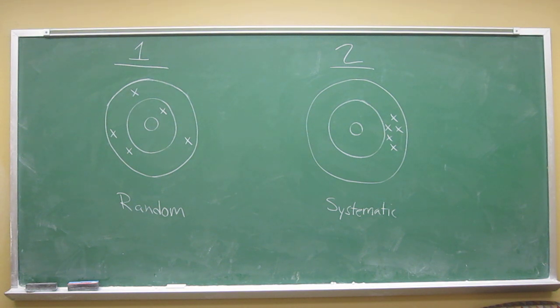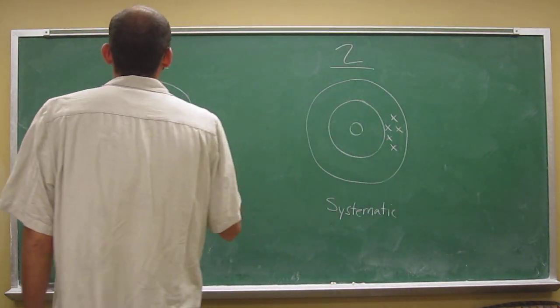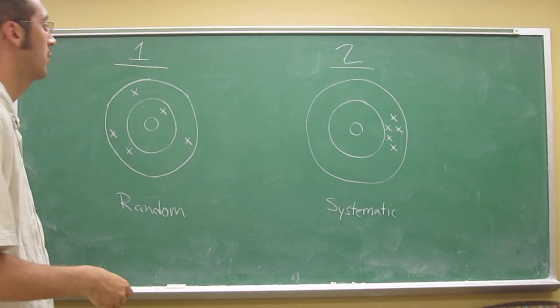Hopefully that gives you some idea about the difference between random and systematic error. The other thing you can talk about is precision and accuracy. If you want to talk about precision, precision is the ability to hit the same point every time.